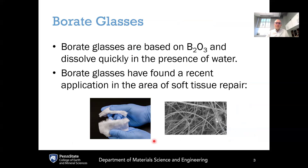Most of the time B2O3 is incorporated into a silicate glass to make a borosilicate glass, but I'd like to start with pure borate glasses and build up the structure from there. Borate glasses don't have nearly as many applications as borosilicate glasses because they corrode so quickly when exposed to a humid environment — they're very hygroscopic, meaning they react quickly with water and degrade rapidly.